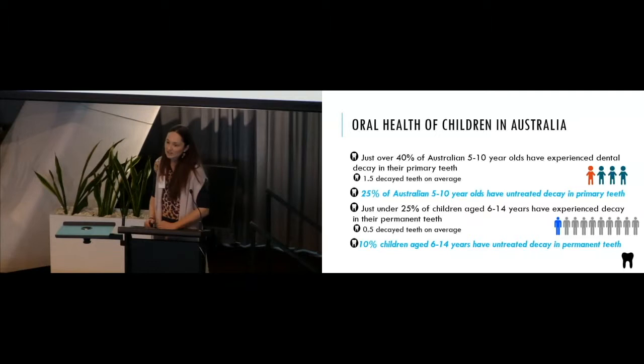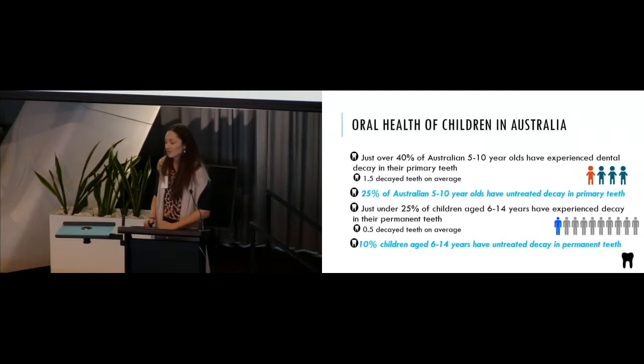And when we look at the adult dentition, it's a little bit better but just over 25% of children aged 6 to 14 have experienced decay in their permanent teeth. On average it's half a decayed tooth per child in Australia. But what's interesting too, 10% of children aged 6 to 14 have untreated decay in their mouth. So this is an open caries lesion that does need a restoration or management that hasn't been treated.